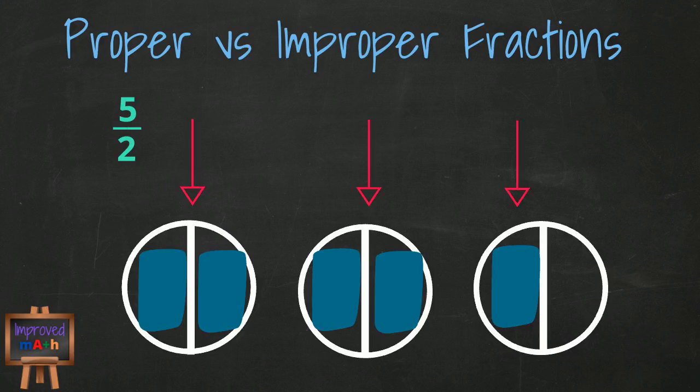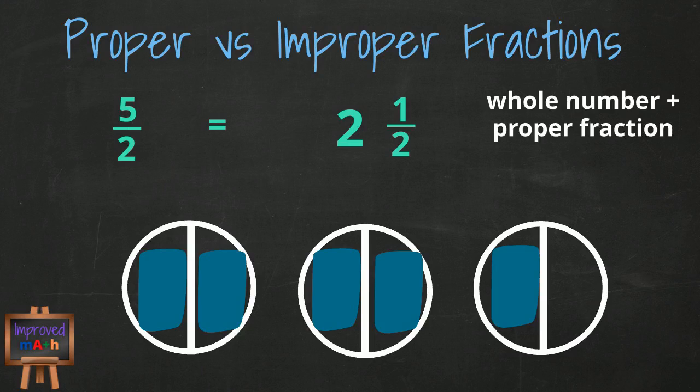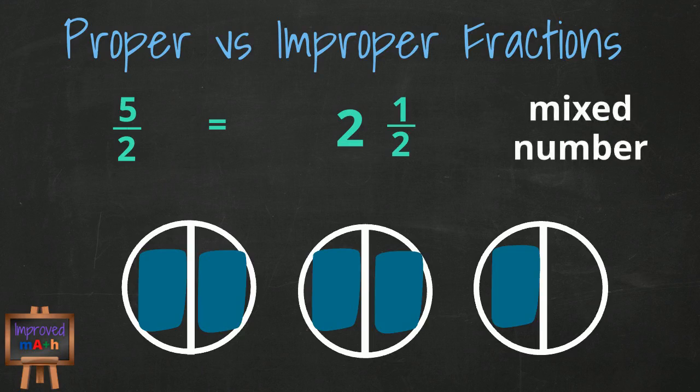Another way to look at this example is this. There are two wholes and one half. When you write a fraction this way, you are basically saying that you have a whole number plus a proper fraction. And when you have a whole number and a proper fraction, you have what they call a mixed number. A mixed number is the same thing, just stated differently, as an improper fraction.